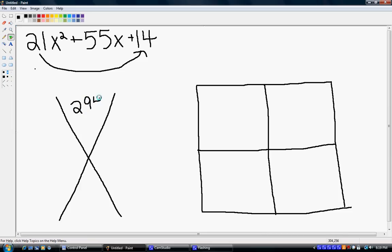And we'll put the middle term down here, so 55, and so we have to find out what multiplies to get this and what adds to get this. So this would be 49 and 6.